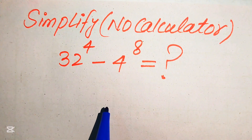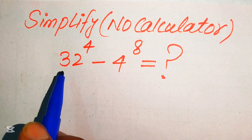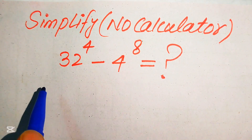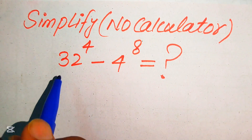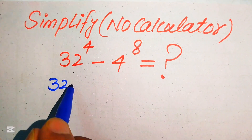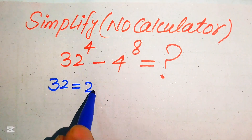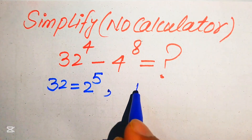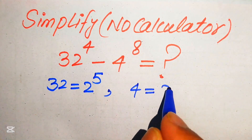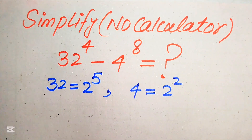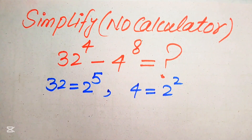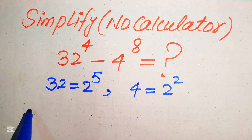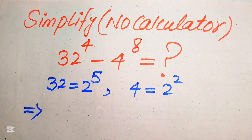The very first step is to focus on the bases of both terms. We know that 32 equals 2 to the power of 5, and the base of the second term is 4, and 4 equals 2 squared. Now we replace these two values in the given expression.